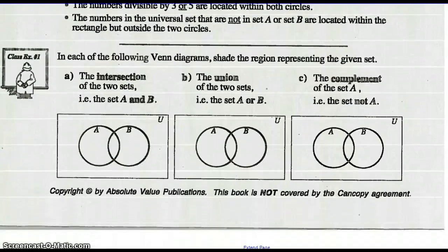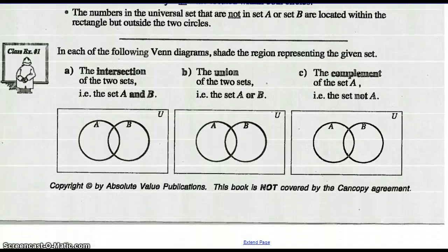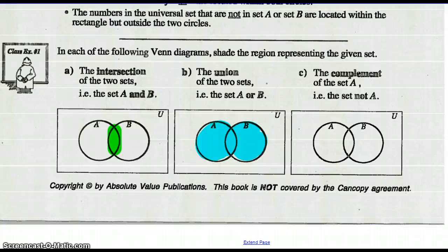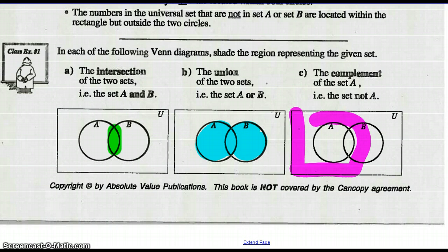In each of the following Venn Diagrams, shade the region represented by the given set. The intersection of two sets, set A and set B — right there. The union of two sets, set A or set B — that would be both circles. And the complement of set A, or not A — not A is everything outside circle A. So there's the set that is not A.